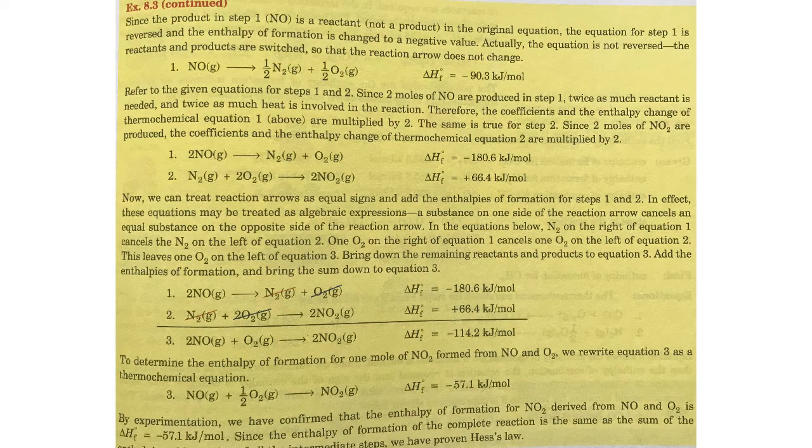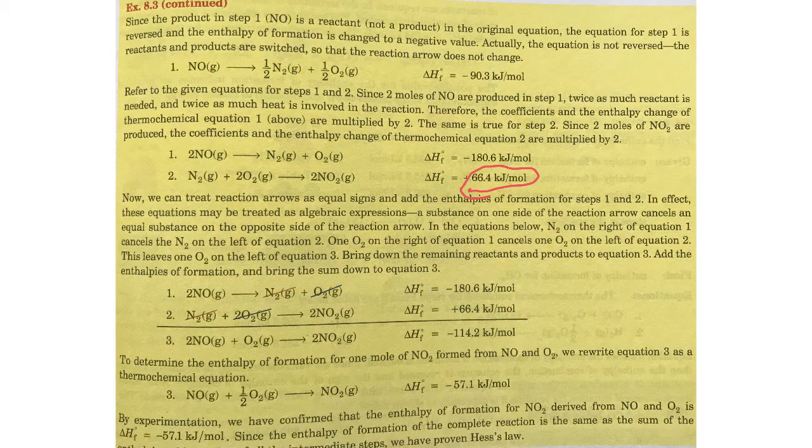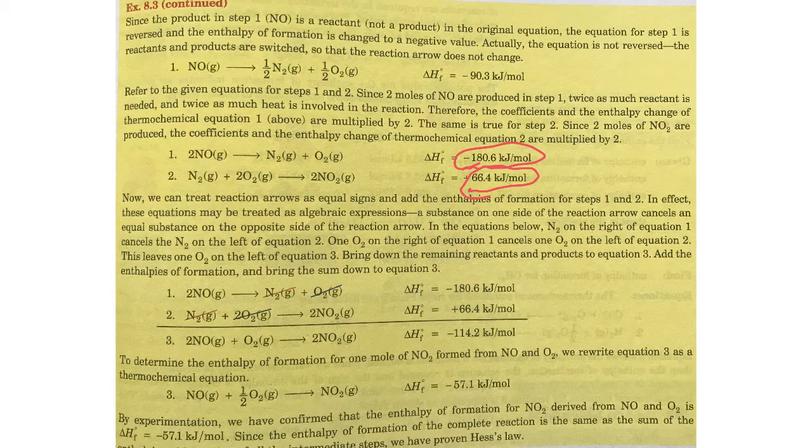And in fact, when we get down a couple of steps here, we see that that's exactly what they did. They doubled the 33.2 and doubled the 90.3 to get the 180.6. So anyways, that's where they're getting that from is because we have two moles of it, we have to have twice the amount of thermal, the delta H. So the delta H of formation is per mole.